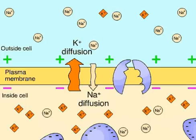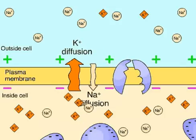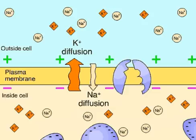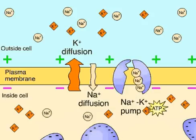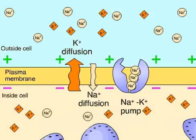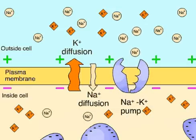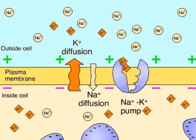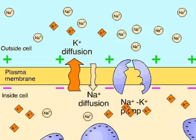Sodium channels allow very little sodium to diffuse into the cell, but potassium ions can flow freely out of the cell, adding to the positive charge outside. The sodium-potassium pump actively transports more sodium ions out of the cell than potassium ions into the cell, contributing to the buildup of positive charge outside while keeping the concentration of sodium low in the cell and the concentration of potassium high. The diffusion of positive potassium ions out of the cell, plus the large negatively charged molecules trapped inside the cell, cause the charge difference that constitutes the resting potential.